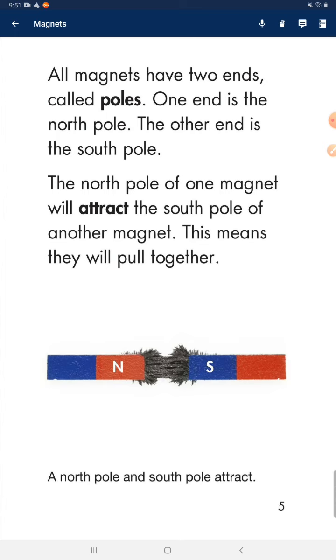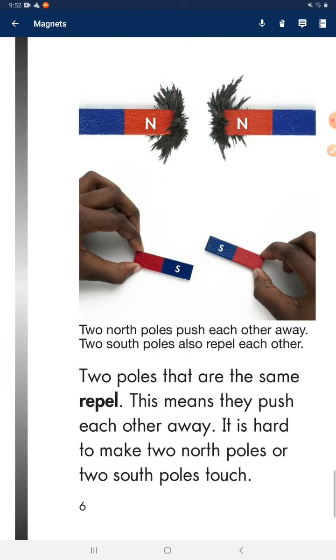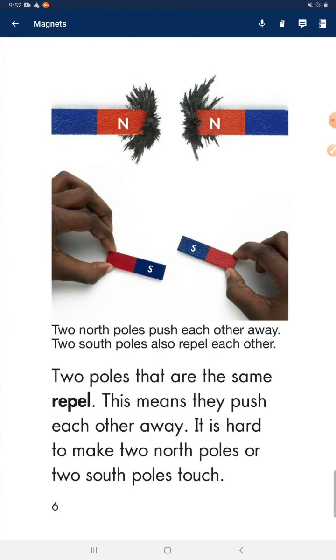The north pole of one magnet will attract the south pole of another magnet. This means they will pull together. Two poles that are the same repel. This means they push each other away. It is hard to make two north poles or two south poles touch.